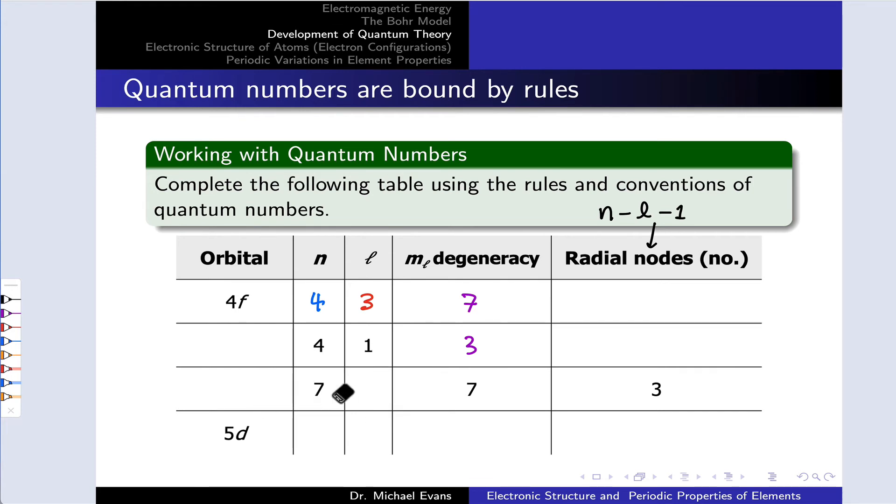For the third row, all we know is n equals 7, and the m sub L degeneracy is 7. When we think about that m sub L degeneracy, that means there are 7 possible values of m sub L. That means m sub L runs from negative 3 to positive 3. That implies that the value of L must be 3. This is a 7f subshell that we're referring to here.